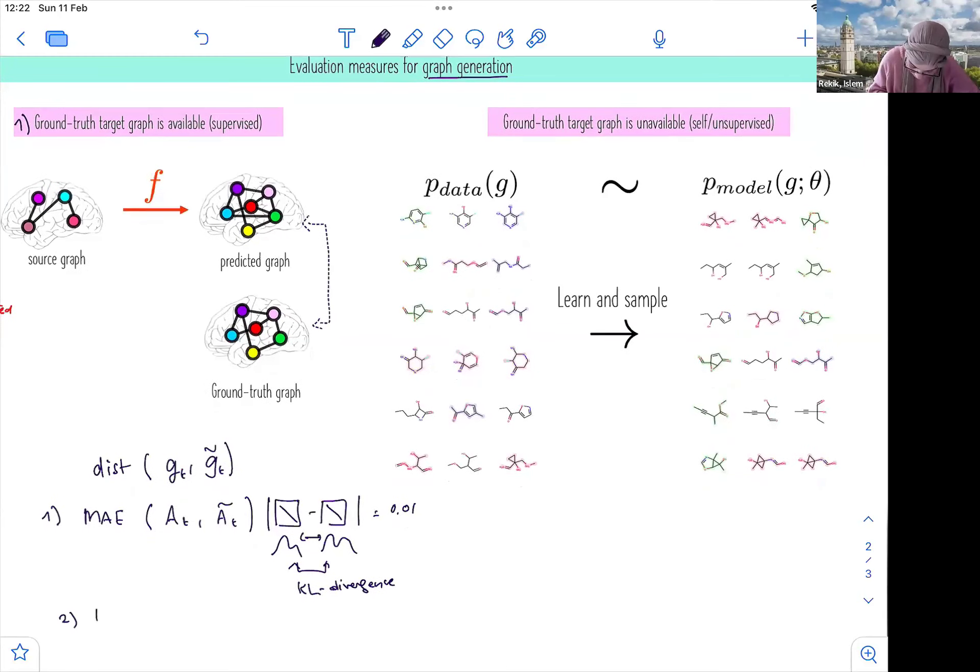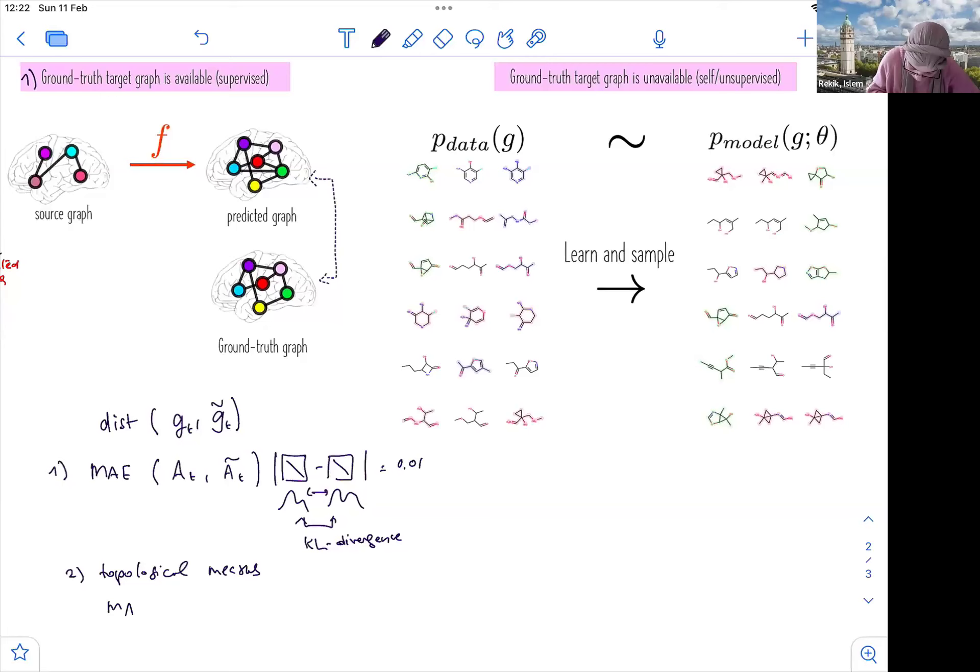Another thing is to use topological measures. For example, you can use the MAE in between eigenvector centrality. Eigenvector centrality. So in this case, you take the graph, and you turn it into the eigenvector centrality for each node. So if we have N by N, so we have N nodes. And then this is, you do this for the A and for the predicted one, you're going to get another.